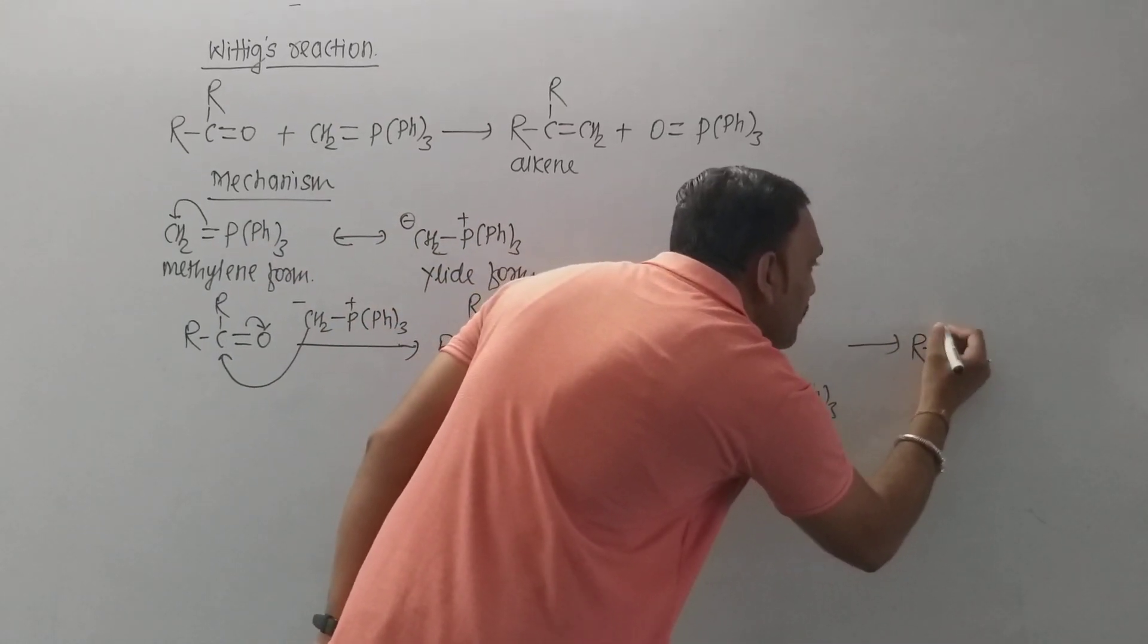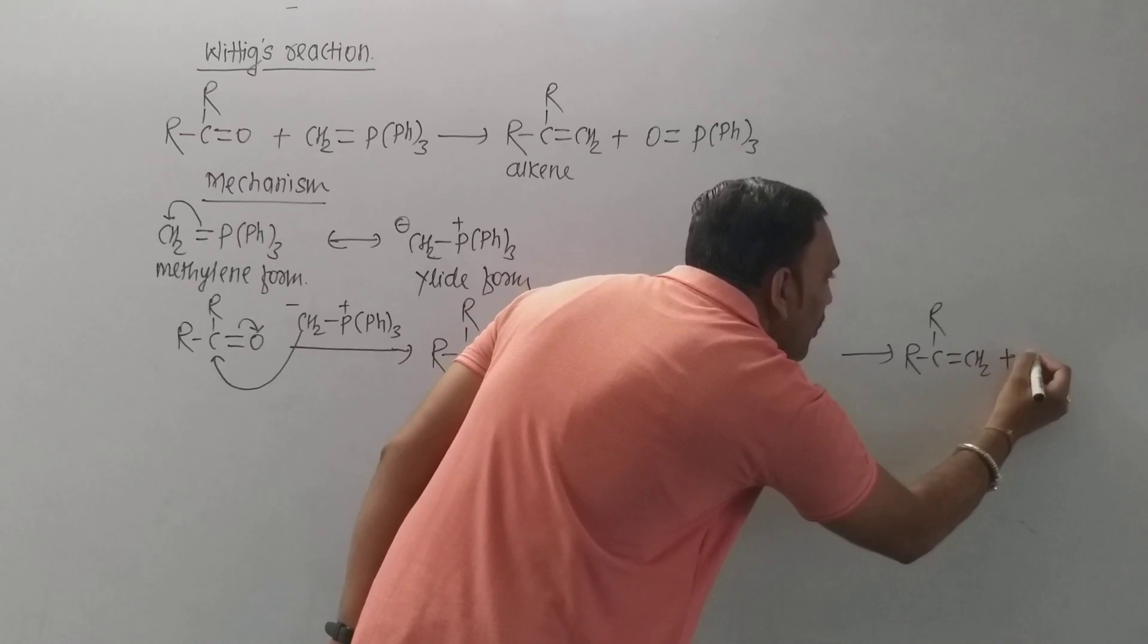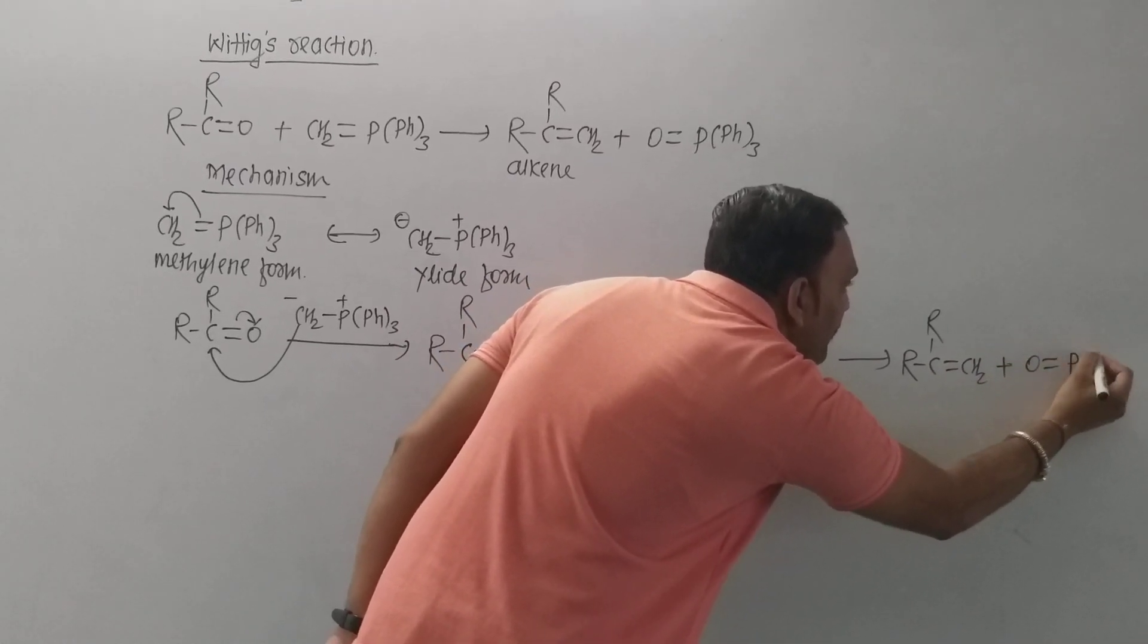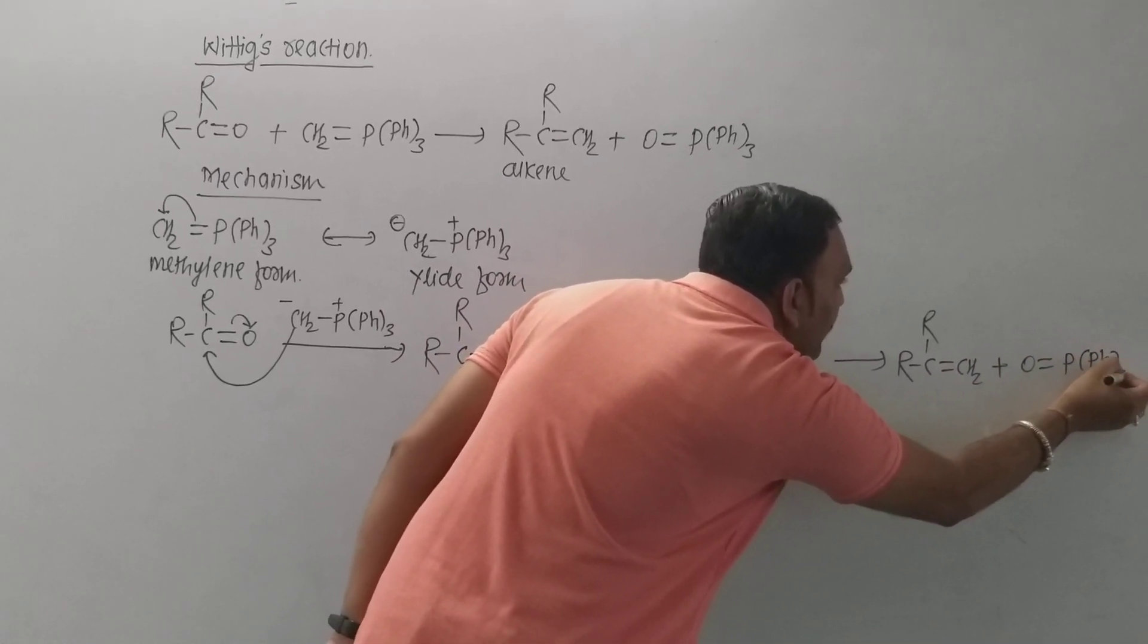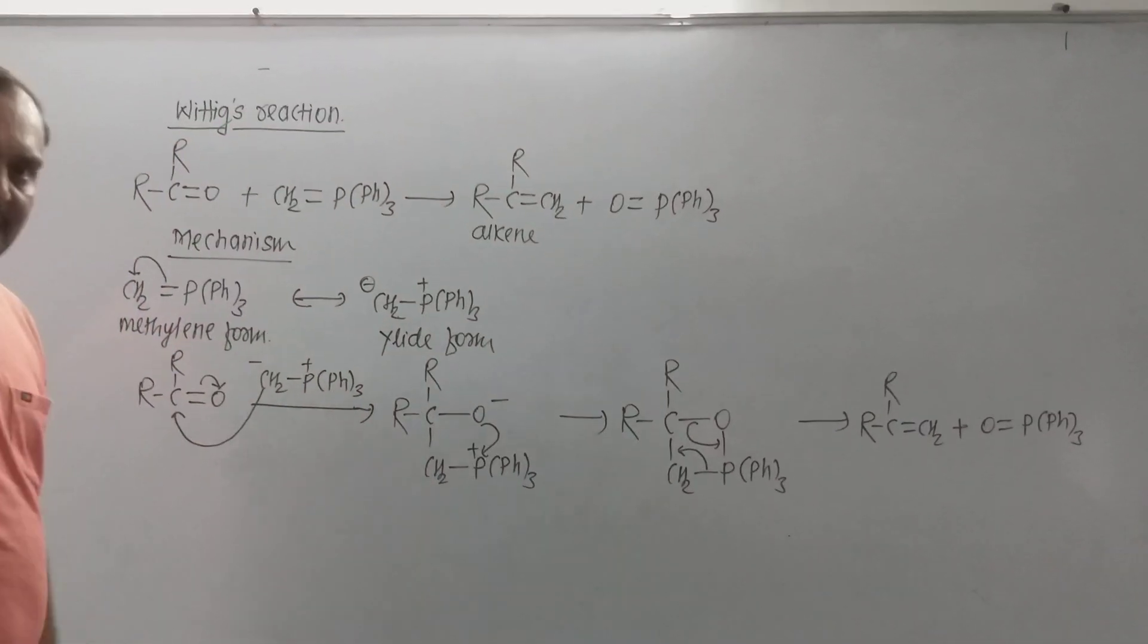This leads to the formation of alkene, which can be represented as shown, along with triphenylphosphine oxide. That's what this reaction is all about.